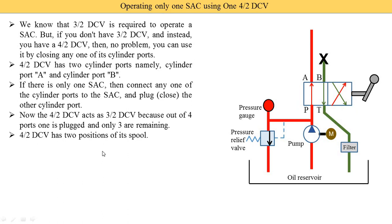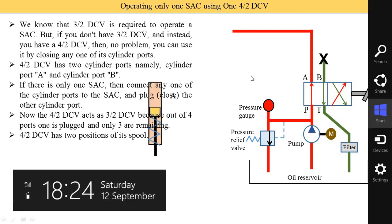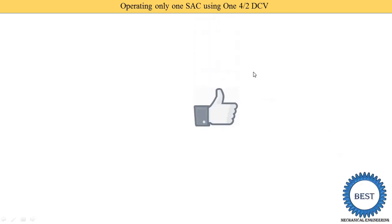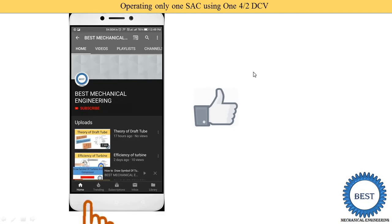The 4/2 DCV has two positions of its spool. For two positions we draw two squares. If a 4/3 DCV were used instead, we would need to add another square. In the next video I will explain the 4/3 DCV. Here you see from port A it is connected with this single acting cylinder. This is the cylinder, this is the piston with its rod, and it is a spring return type. Before moving ahead, I request you to like the video and subscribe my channel for more videos related to hydraulic systems and mechanical engineering.